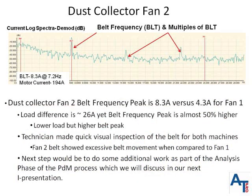A sister machine called dust collector fan 2 was also tested. Note that the motor load is lower than fan 1 — 194 amps versus 220 amps — yet the belt frequency is at 8.3 amps, whereas fan 1 had a peak of only 4.3 amps. From this initial test, we cannot conclude that this is a serious problem, but instead this is a warning flag that something is different about this machine compared to the first. As this data was taken during the detection phase of the predictive maintenance work process, the next step is to start the analysis phase. The technician made a visual inspection of both machines and noted that the belt on fan 2 has excessive belt movement compared to fan 1. The next step may include taking additional data with ESA or bringing in other instruments as part of the analysis phase. We will discuss this additional work in our next presentation.